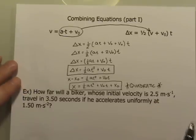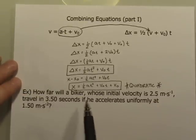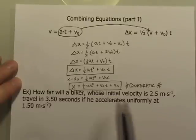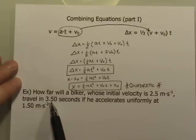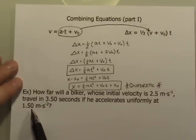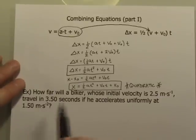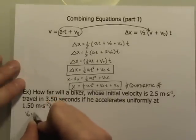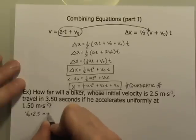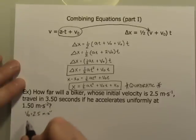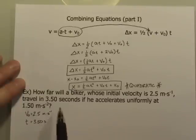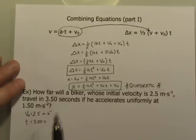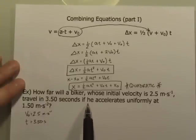Let's take a look at how we would use this. For example: how far will a biker whose initial velocity is 2.5 meters per second travel in 3.5 seconds if he accelerates uniformly at 1.5 meters per second squared? In this case, the initial velocity was explicitly given as 2.5 m/s, the time is 3.50 seconds — implied by the units — and it does say he accelerates uniformly.